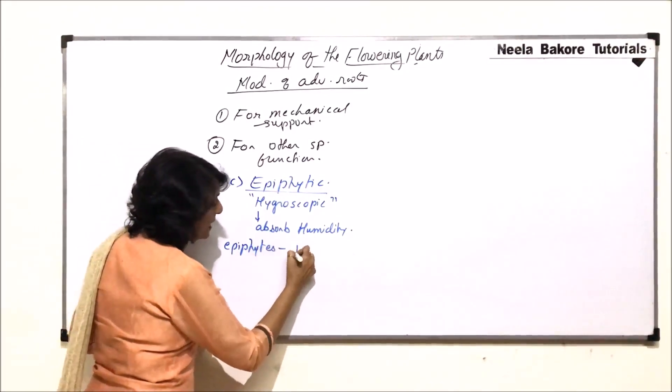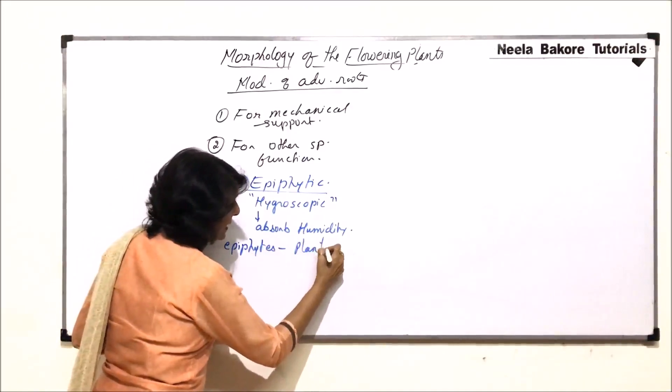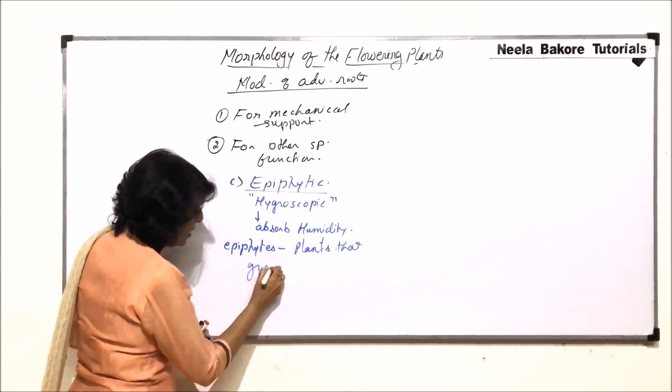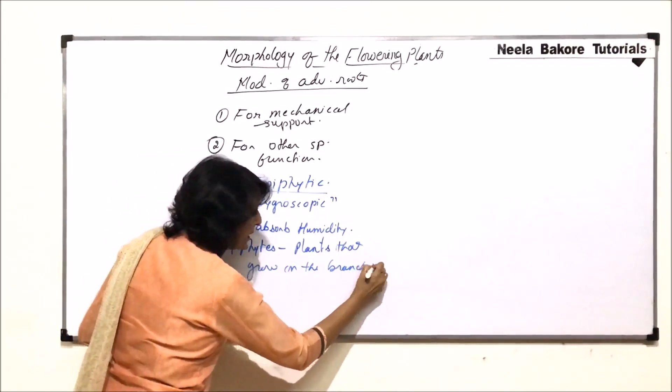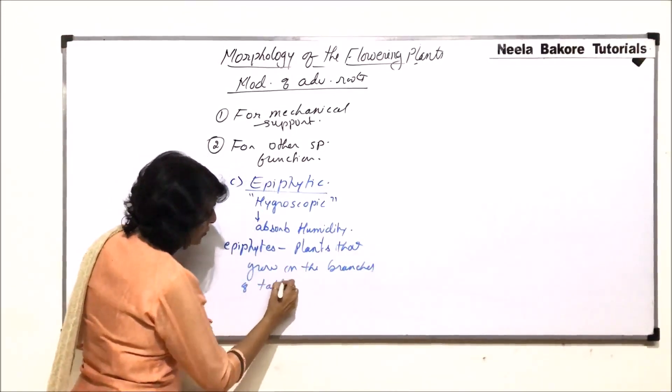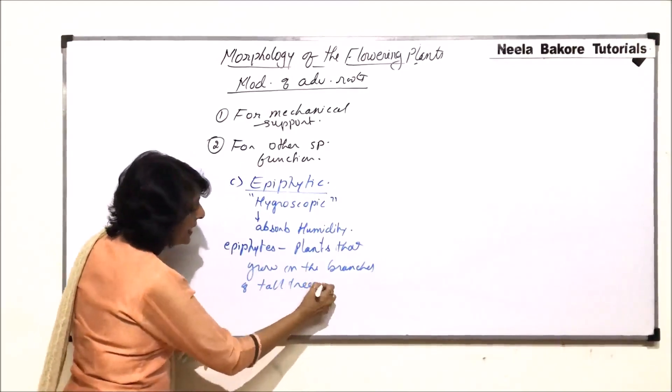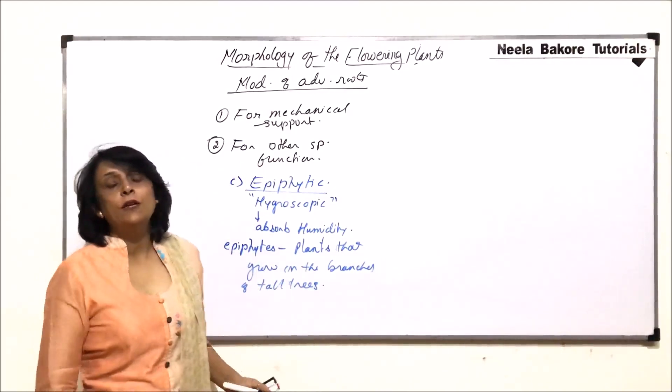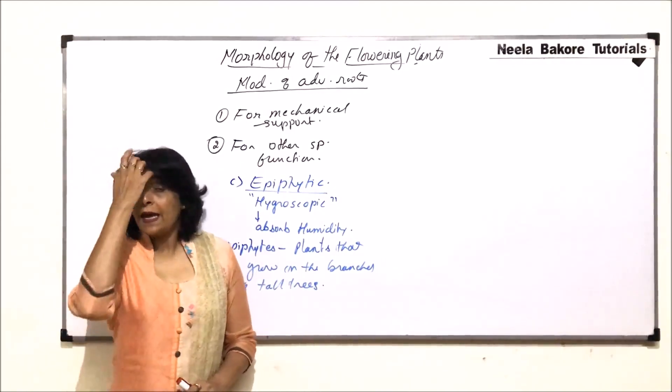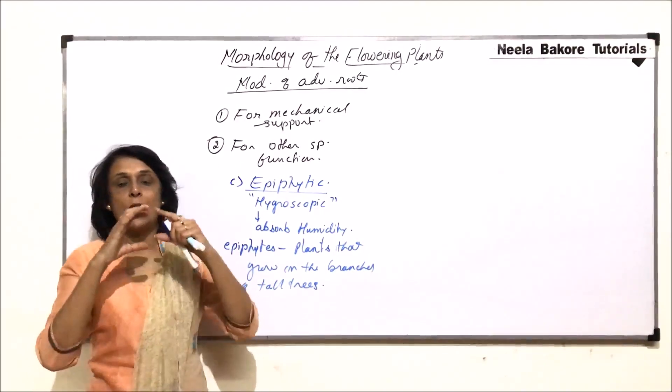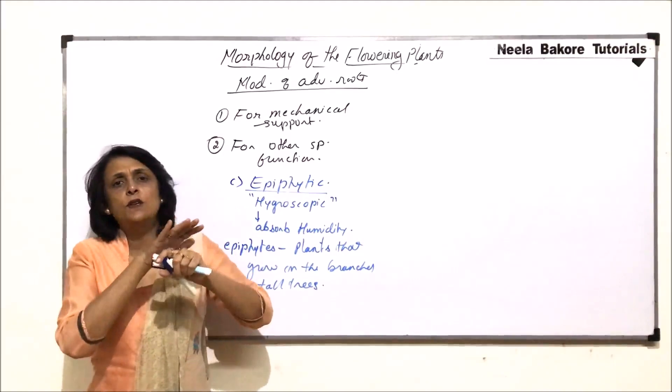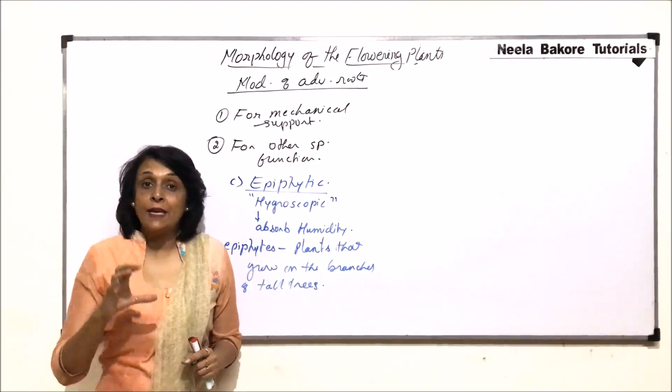Epiphytes are plants that grow on the branches of tall trees. Normally, these epiphytes are found in evergreen forests and in evergreen forests, the canopy is very thick. Canopy means the upper part of the tree, which is green. So, if the canopy is thick,